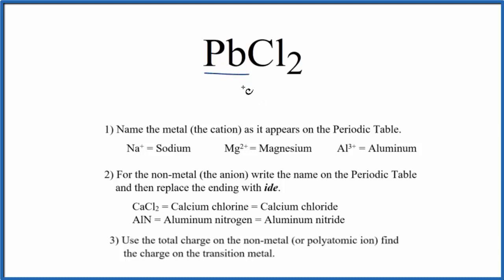Specifically, Pb, which is lead, that's a transition metal. So we need to take that into account as well when we write the name for PbCl2. So we have this ionic compound with a transition metal. We'll use these rules to write the name.